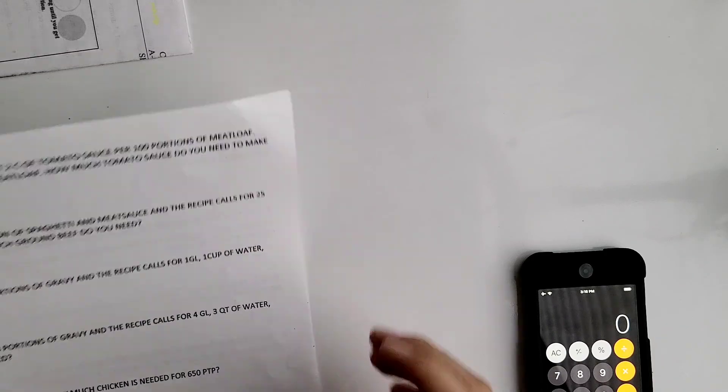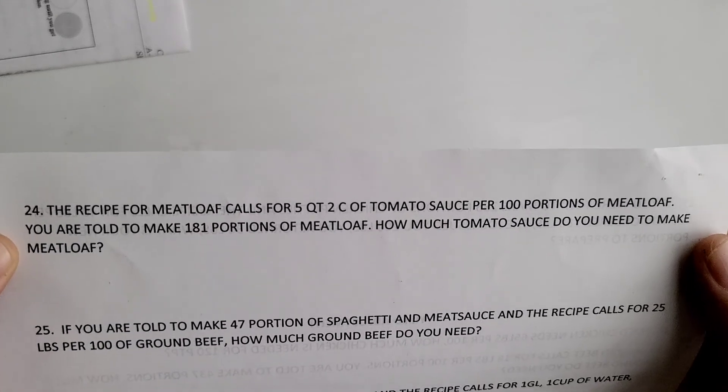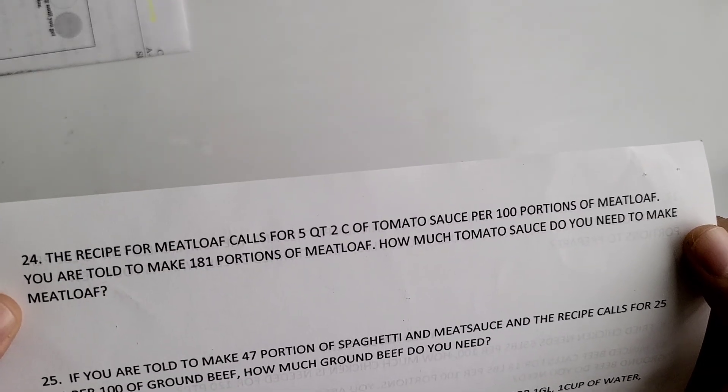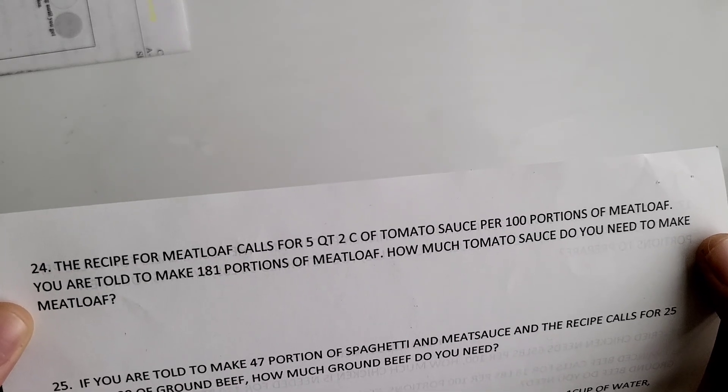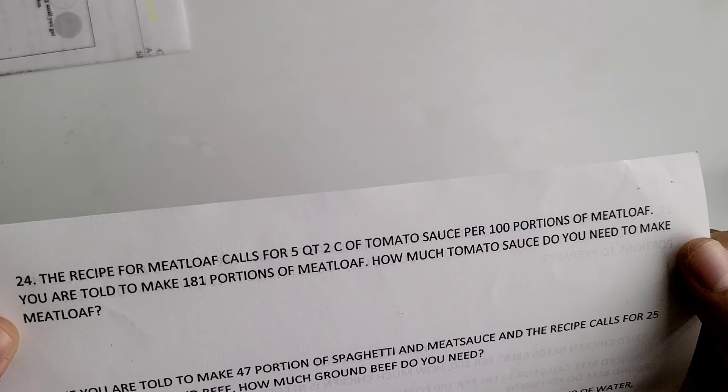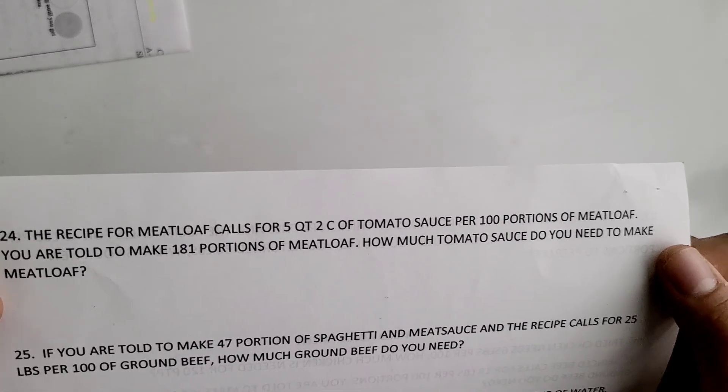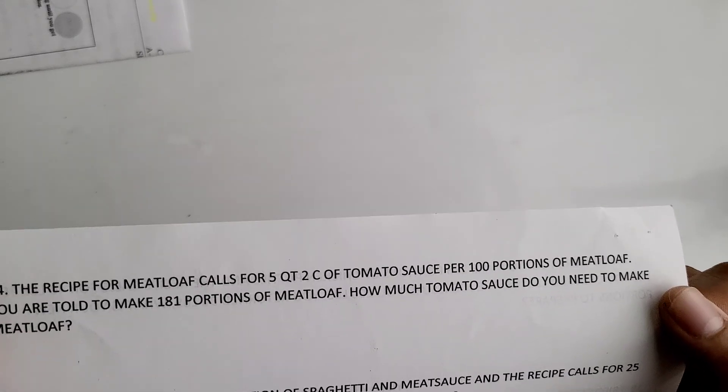Continuing on with these mixed unit word problems, we're going to be doing number 24. The recipe for meatloaf calls for 5 quarts and 2 cups of tomato sauce per 100 portions of meatloaf. You're told to make 181 portions of meatloaf. How much tomato sauce do you need to make the meatloaf?